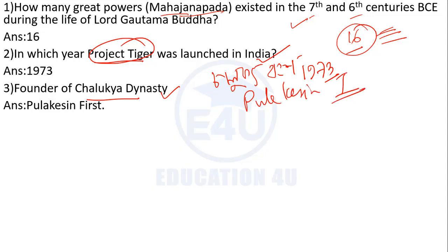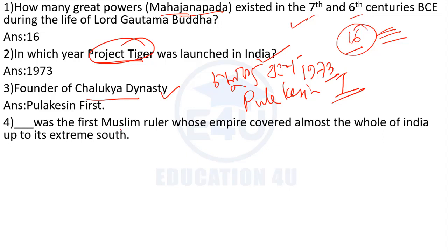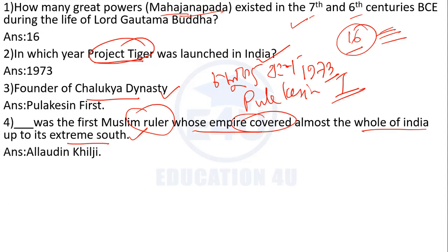The first Muslim ruler whose empire covered almost the whole of India up to its extreme south. His empire covered India including the southern region.